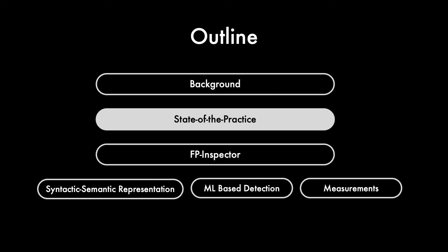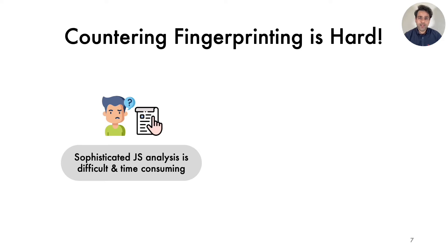Before I talk about our approach, I want to give an overview of the state-of-the-practice fingerprinting countermeasures, their ineffectiveness, and motivate the need for a better solution. Browser fingerprinting detection requires sophisticated JavaScript analysis, which is very difficult and time-consuming, and cannot be effectively scaled. So existing production mechanisms in browsers such as Safari, Firefox, and Brave sidestep the problem of browser fingerprinting detection and instead put blanket restrictions on the APIs.